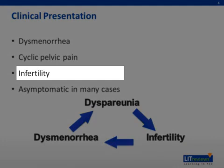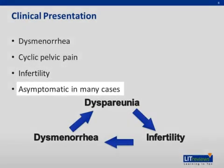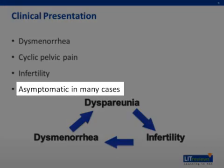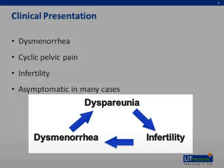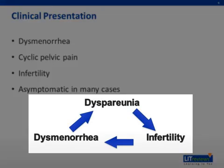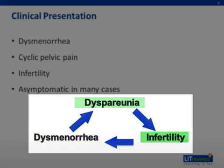Additionally, an endometriosis patient may have infertility and nothing else. Don't forget, though, that like many diseases, there are women who meet the diagnosis of endometriosis but actually have no symptoms. We'll talk later about how you would make that diagnosis. Traditionally, the classic triad pictured here is associated with endometriosis: painful intercourse, painful menses, and infertility. But of course, your patients will each have their own particular clinical picture.